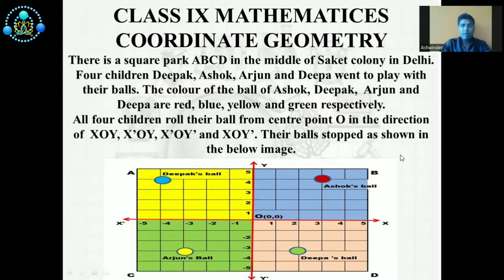There is a square park ABCD in the middle of Saket Colony in Delhi. Four children, Deepak, Ashok, Arjun, and Deepa went to play with their balls.